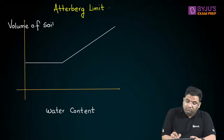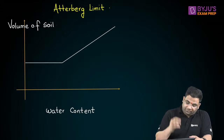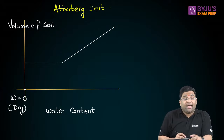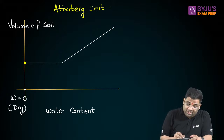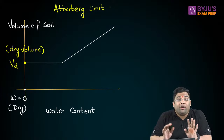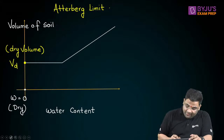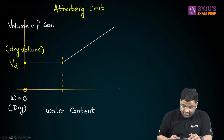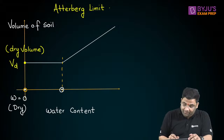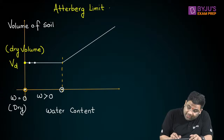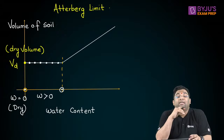At zero water content, soil will be dry, and the corresponding volume will be known as the dry volume. When he increased the water content, he got a plot. From a certain point, the water content is increasing — it is greater than zero — but the volume of soil is constant, equal to the dry volume.